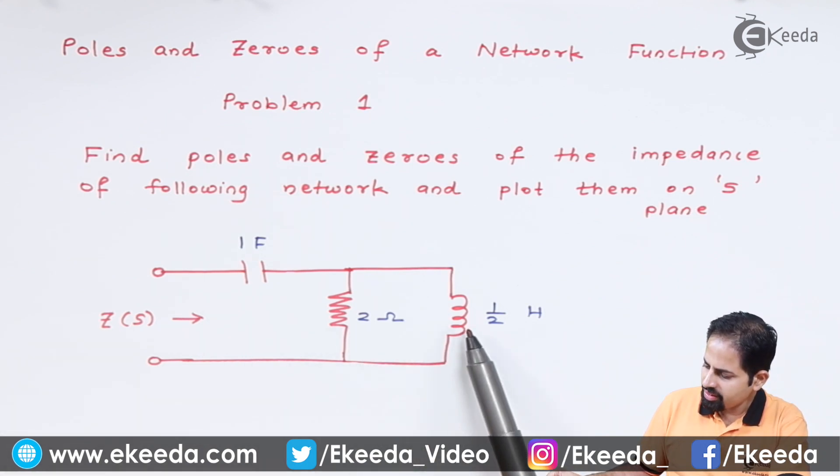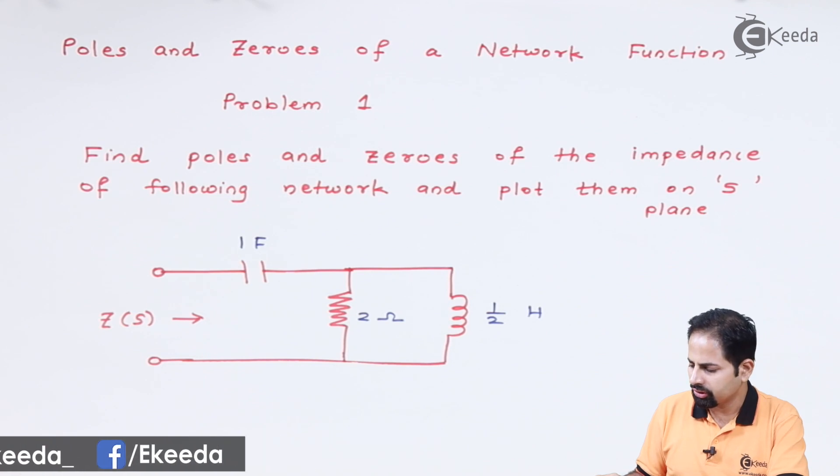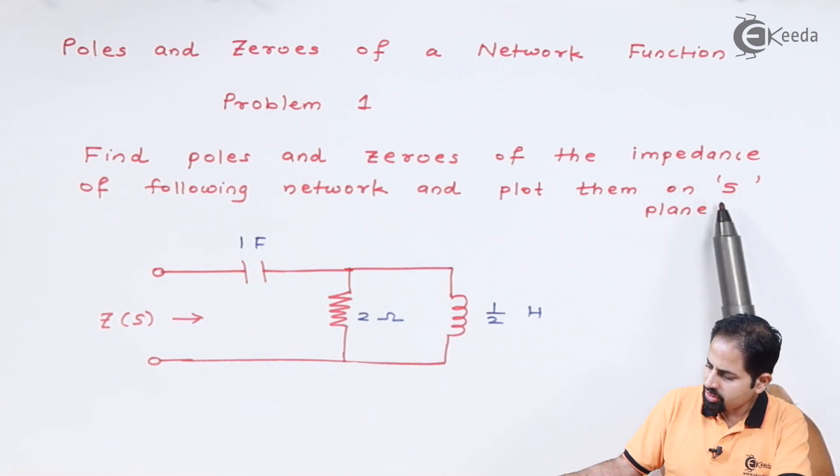This is resistance and this is inductor. Resistance remains unaffected, but inductor and capacitor get changed. We have to plot the poles and zeros in s-plane.